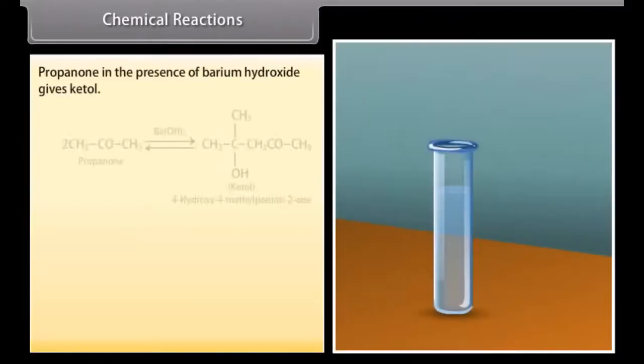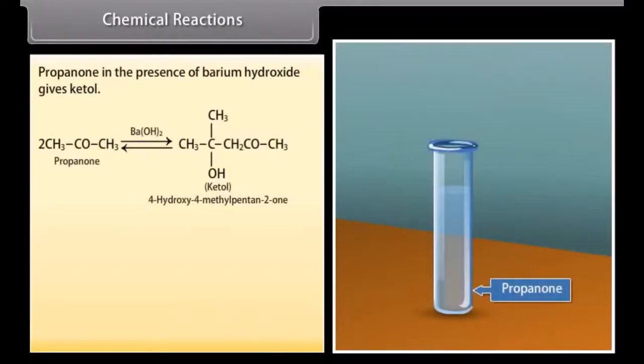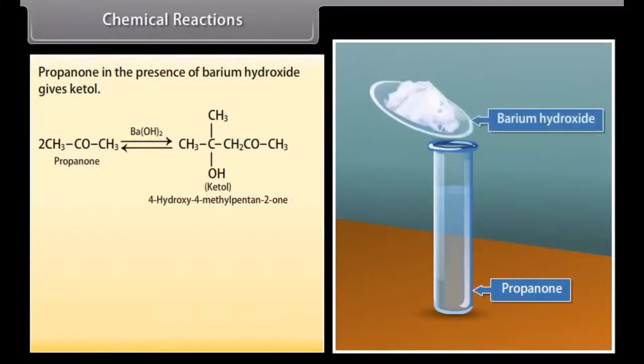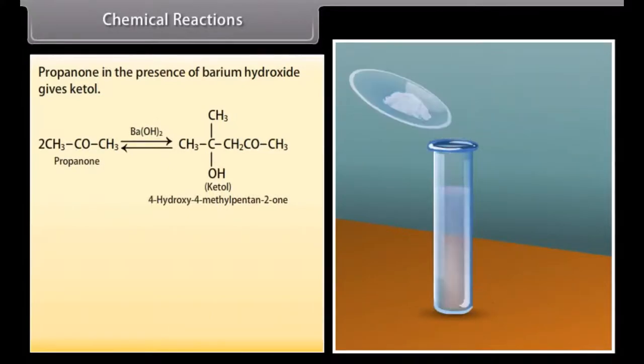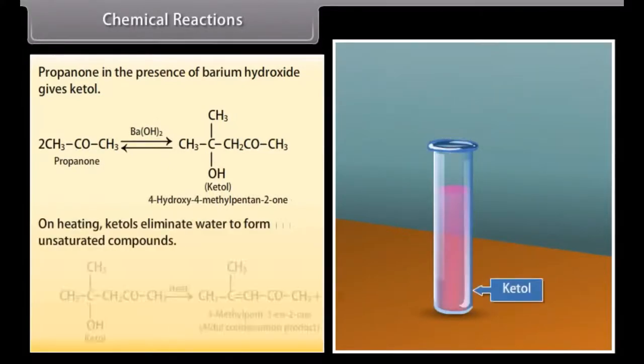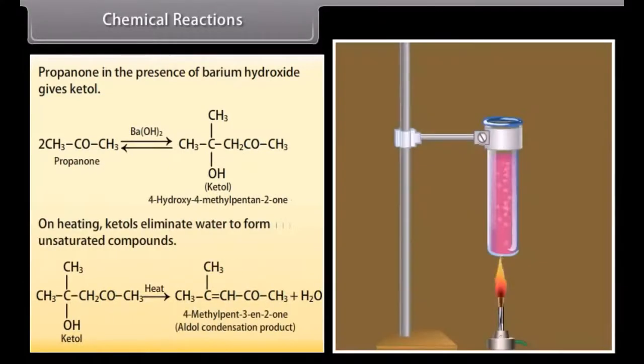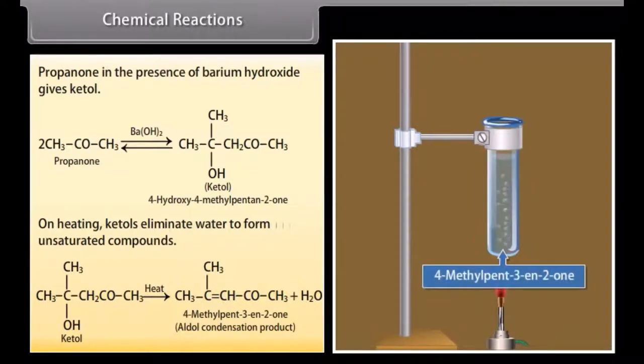Propanone in the presence of barium hydroxide gives ketol. On heating, ketols eliminate water to form unsaturated compounds.